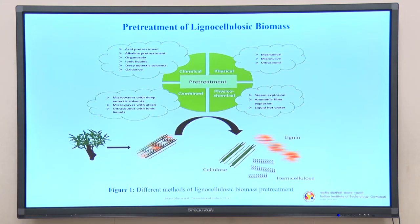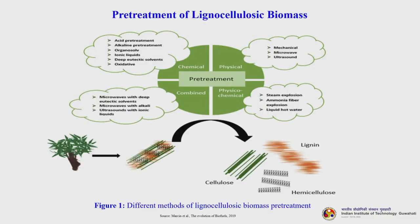Pretreatment of lignocellulosic biomass can be carried out by various methods: chemical, physical, combined and physicochemical. Under chemical it is acid pretreatment, alkaline, organosolv, ionic liquids, and deep eutectic solvents. Physical we have already discussed. In combined pretreatment, it is microwave-based, microwave with alkali, microwave with deep eutectic solvents, ultrasound with ionic liquids - basically a combination of two pretreatment technologies. Then physicochemical: steam explosion, ammonia fibre explosion, liquid hot water.